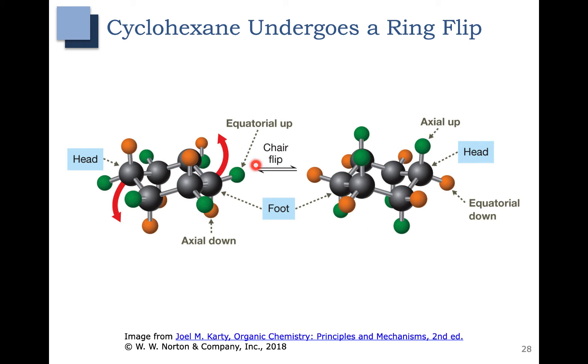For example, take a look at this hydrogen here. It's equatorial and it's pointed up slightly. In the chair flip, now it's axial and pointed up. This axial down hydrogen now becomes this equatorial down hydrogen in the picture on the right.